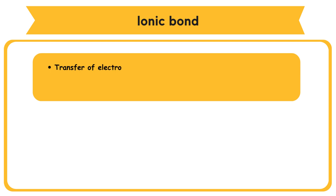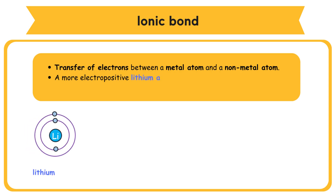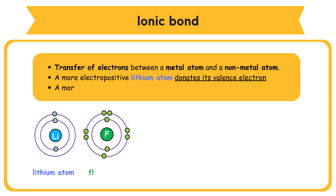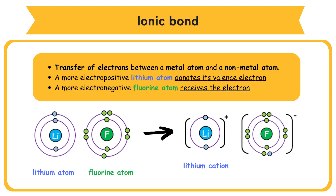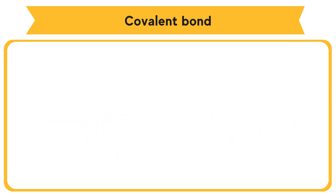An ionic bond involves the transfer of electrons between a metal atom and a non-metal atom. The more electropositive lithium atom donates its valence electron to a fluorine atom. A lithium ion (Li⁺ cation) is formed, and the more electronegative fluorine atom receives the electron into its outermost shell, forming a fluoride ion (F⁻ anion). Both the lithium ion and the fluoride ion achieve a stable electron arrangement — duplet or octet.